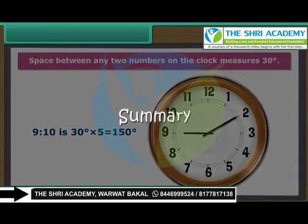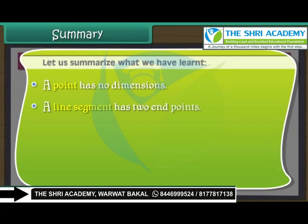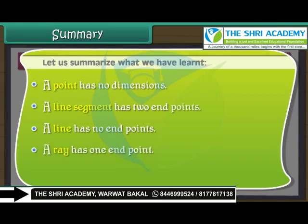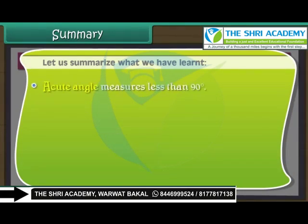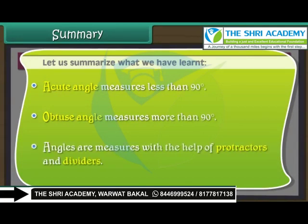Let us summarize what we have learned. A point has no dimensions. A line segment has two end points. A line has no end points. A ray has one end point. A right angle measures 90 degrees. An acute angle measures less than 90 degrees. An obtuse angle measures more than 90 degrees. Angles are measured with the help of protractors and dividers.